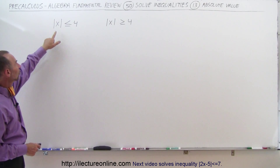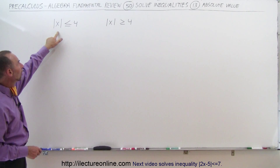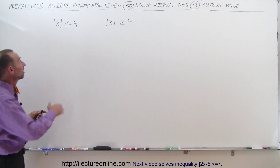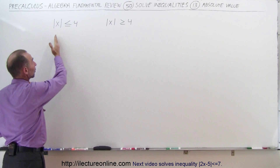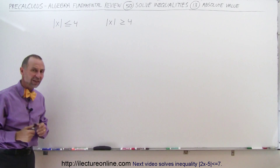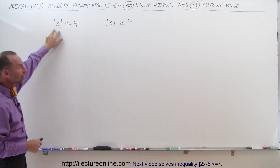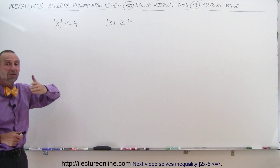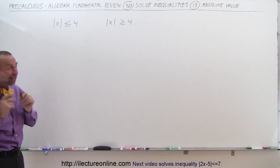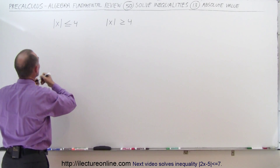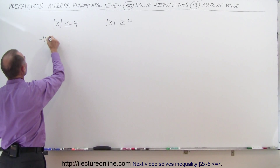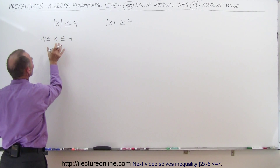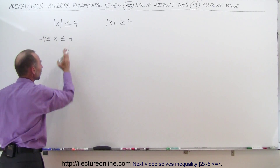First, let's look at the left side. We can see that the absolute value of x is going to be less than or equal to 4. So that means if x is a positive number, it's somewhere between 0 and 4, including 4. But if x is a negative number, the absolute value sign makes it back into a positive number, and again we want that number to be somewhere between 0 and 4, but on the negative side, which means this translates into negative 4 is less than or equal to x, which is less than or equal to positive 4.